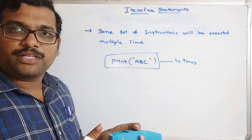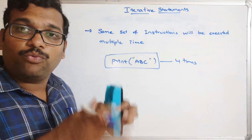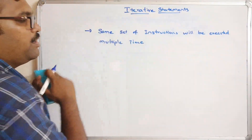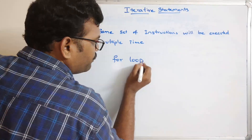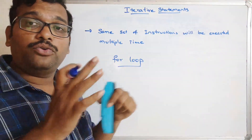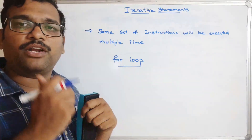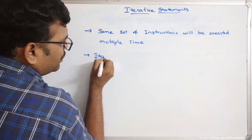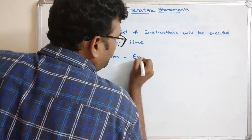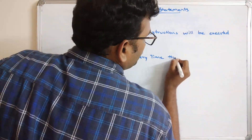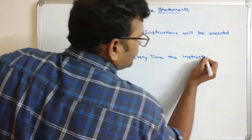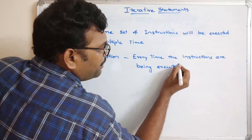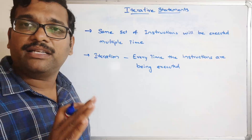So how can we execute the same thing multiple times? We need not write the same thing multiple times — we write it only once and the same instruction will be executed multiple times. For that we are going to use an iterative statement called the for loop. Every time the set of instructions is being executed is called an iteration.